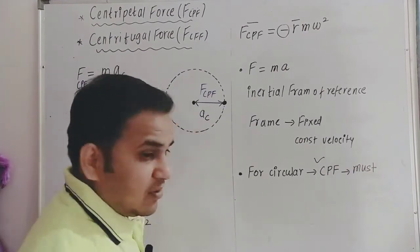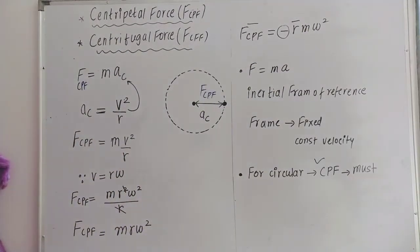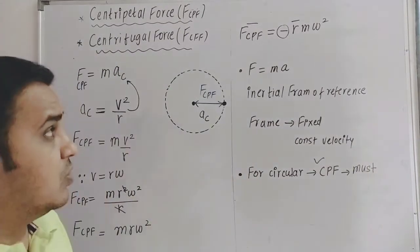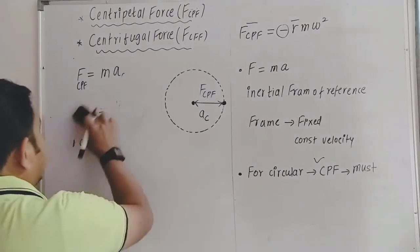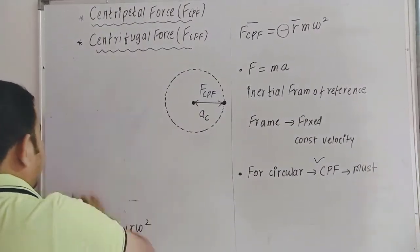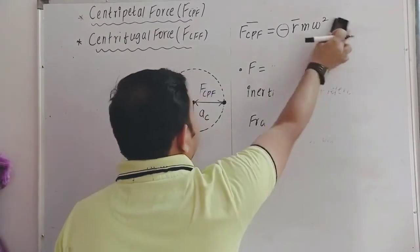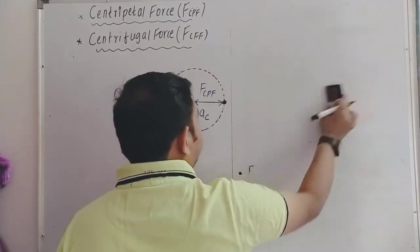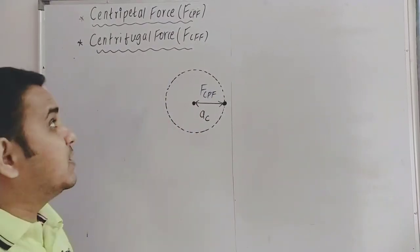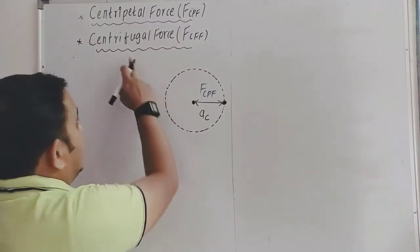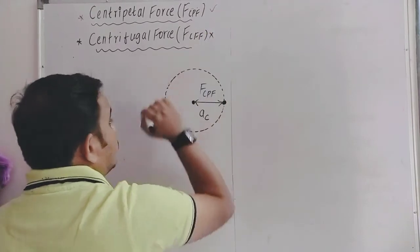Now let's quickly see what centrifugal force is. Centrifugal force is exactly opposite to centripetal force. During the circular motion of a particle, the real centripetal force Fcp must be balanced, so a force must act in the opposite direction — away from the center — to keep the particle on the circumference.